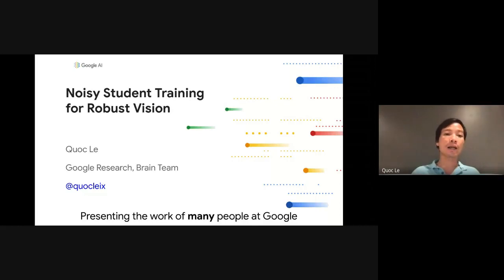Hi, my name is Quoc Lê and I'm a researcher in the Google Brain team. I will present some of our recent work on noisy student training and how it can be used to improve robustness for computer vision models.